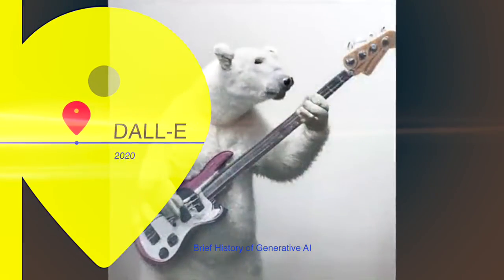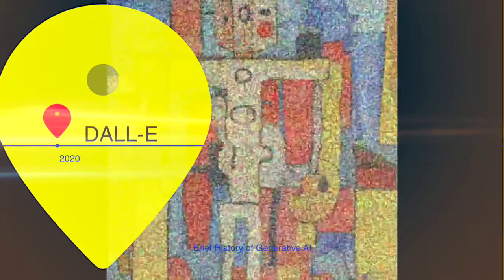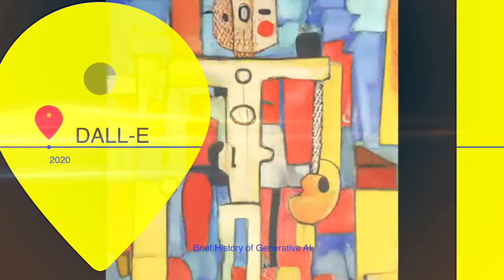DALL-E, another OpenAI creation, stunned the world with its ability to generate images from text descriptions.